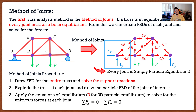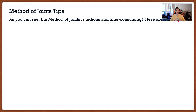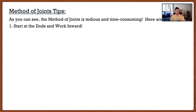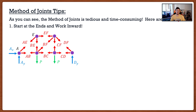That's the method of joints — it's actually really simple. However, it can be a pain because a typical question will ask you to solve for every single force component in the truss. With six joints and six free body diagrams to analyze, it becomes time-consuming. That said, there are tips to help you avoid common mistakes. The first tip is: start at the ends and work inward — start at the support reactions and work your way into the truss.